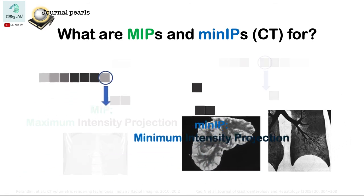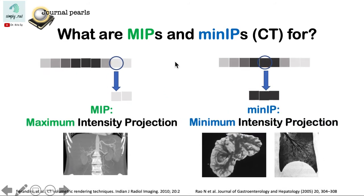In summary, MIPS and MinIP are volume rendering techniques which help us visualize structures of a certain density — hyperdense structures for maximum intensity projection, and MinIP for hypodense structures like ducts and airways. Thank you for listening.